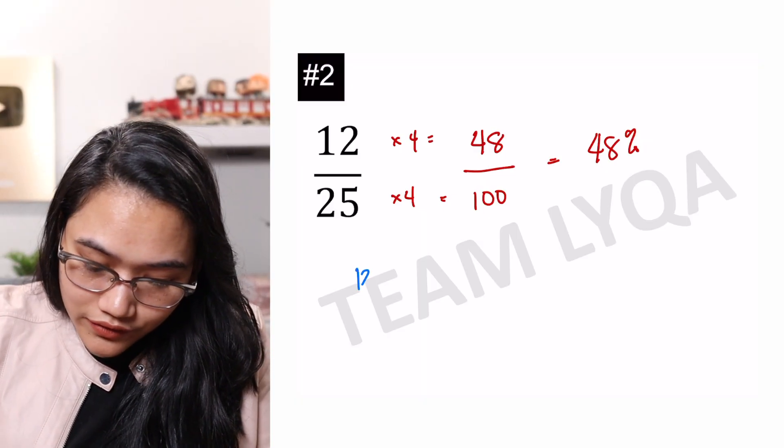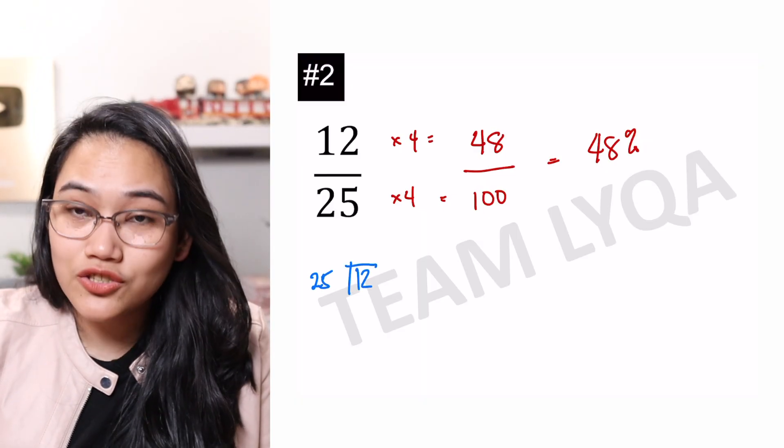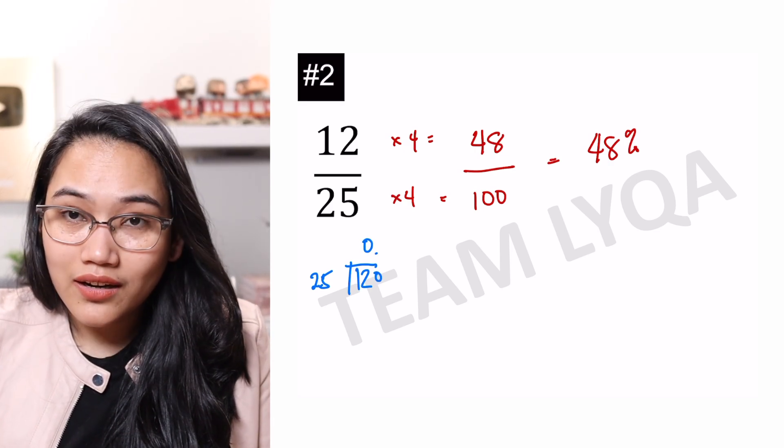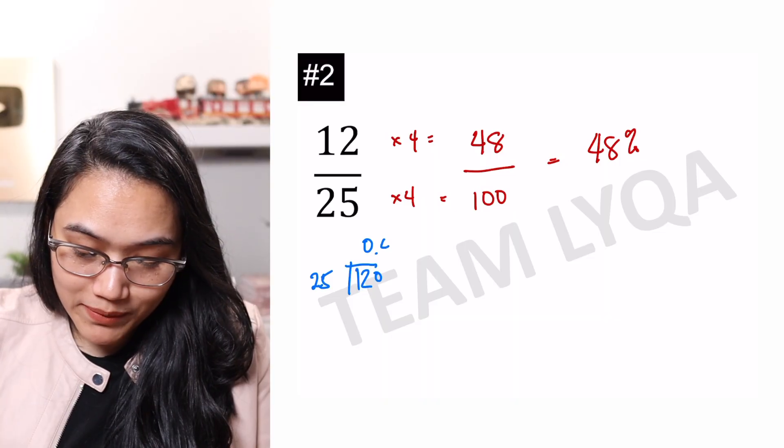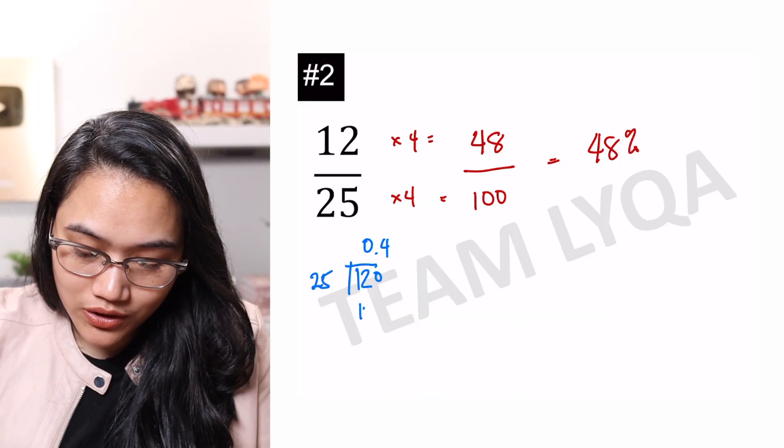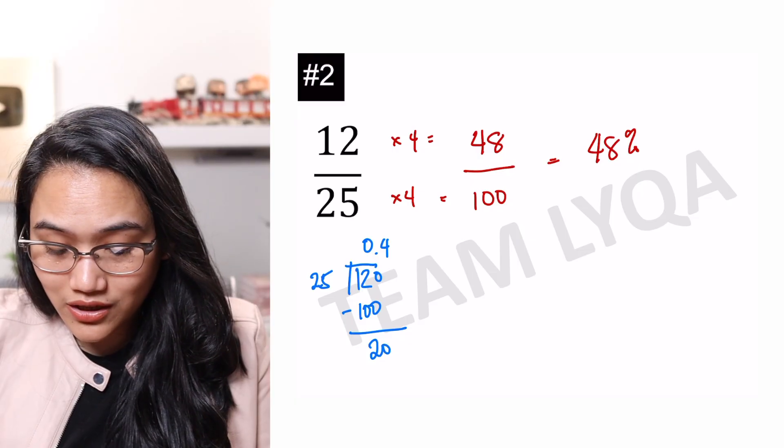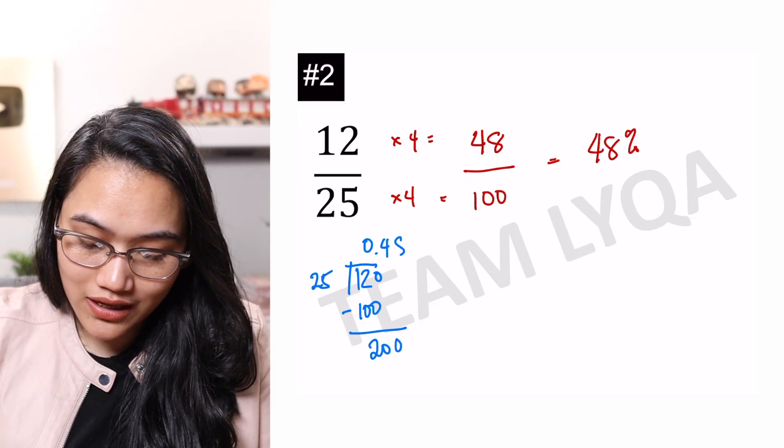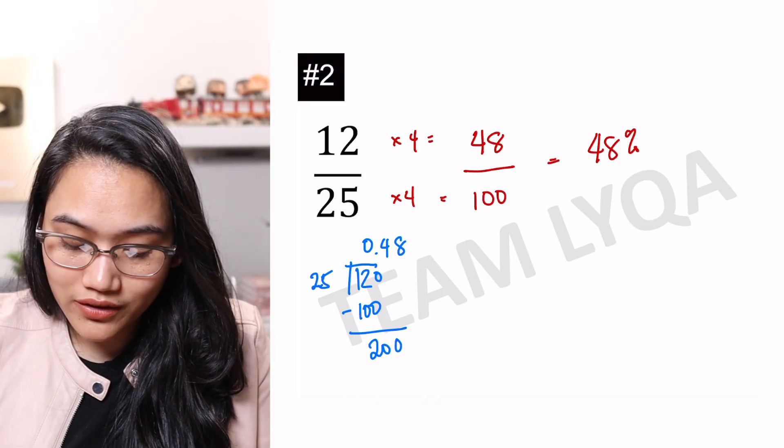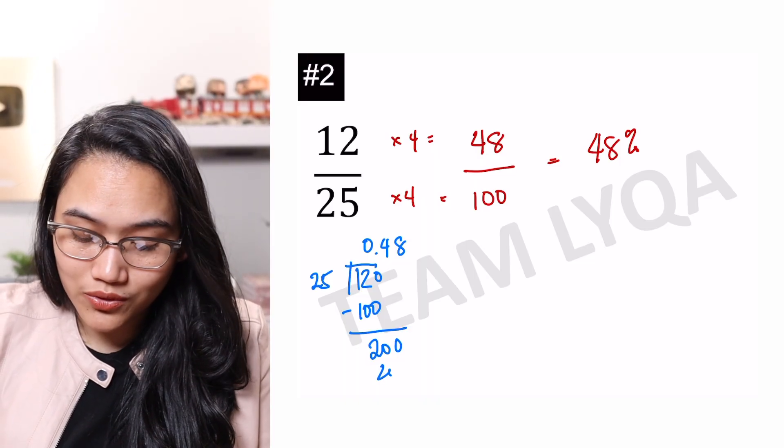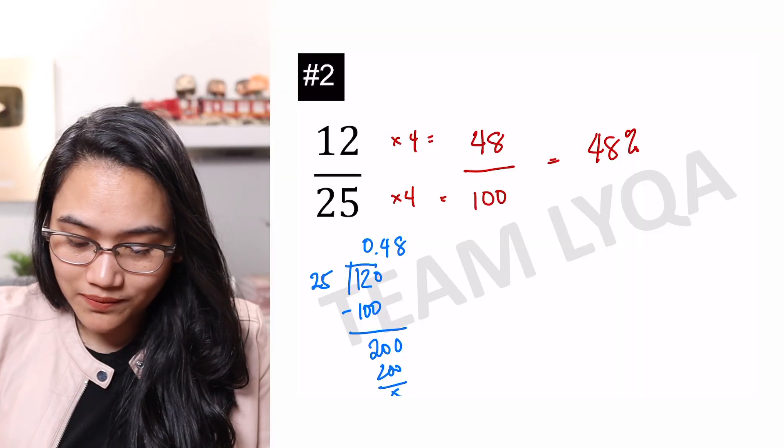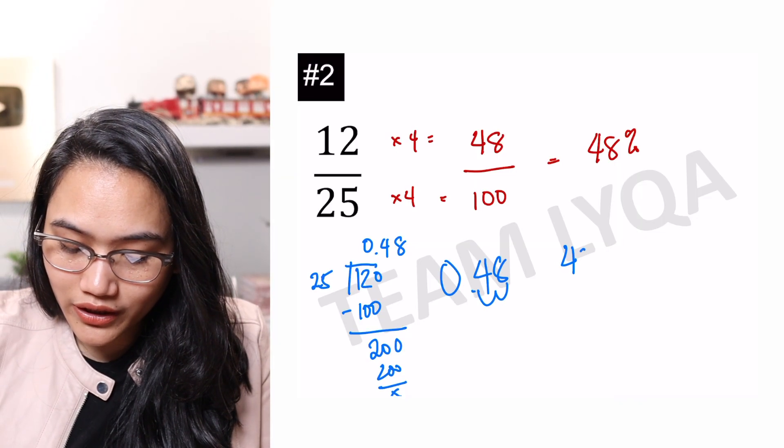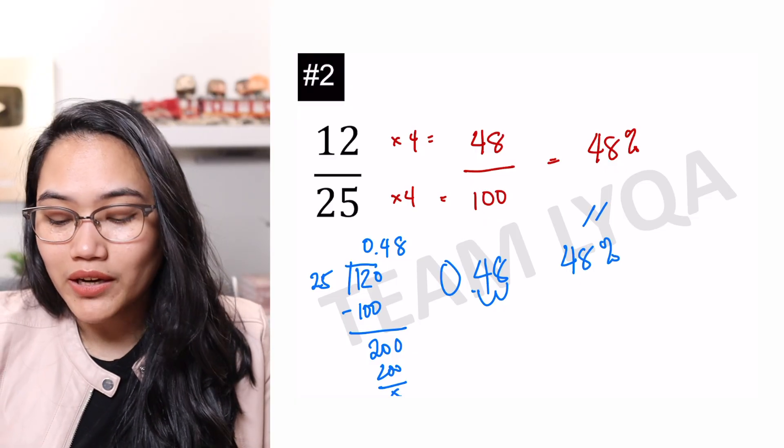Kung ino long cut natin. 12 divided by 25. This is just to check. Zero. Magbababa tayo ng isa pang zero dyan kasi nag-decimal na siya. Ang kasya sa 120 na 25 ay apat. 4 times 25 is 100. Bawas natin siya dyan. 20. Magbababa tayo ng isa pang zero. 200 divided by 25 is 8. So, the answer is 0.48 kasi yung 8 times 25 is just 200. Tapos na rin tayo dyan. Wala na tayo gagawin. So, 48. 1, 2. 48%. Again, pareho lang siya. 48%.